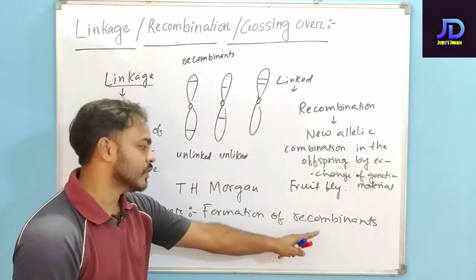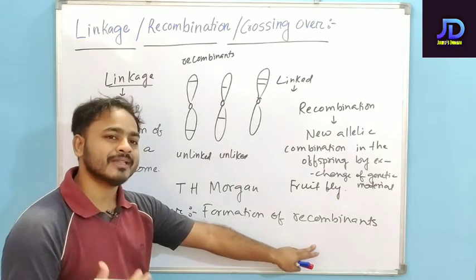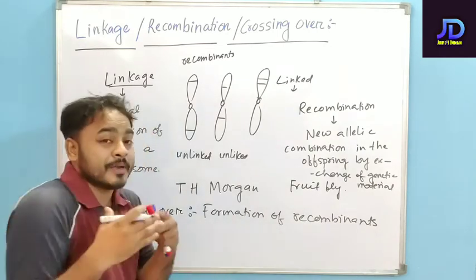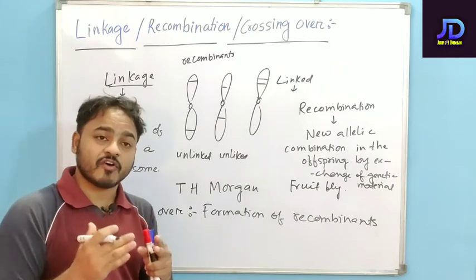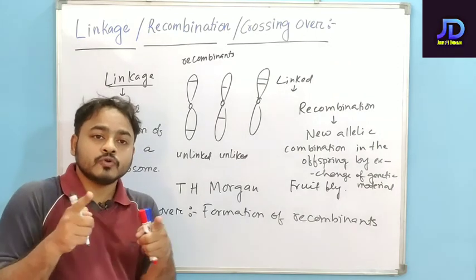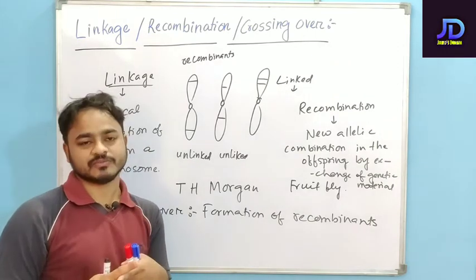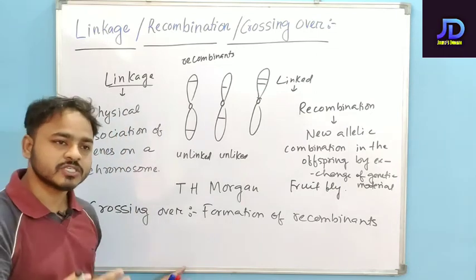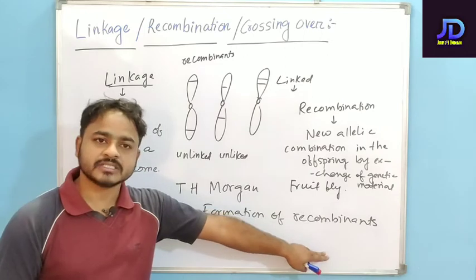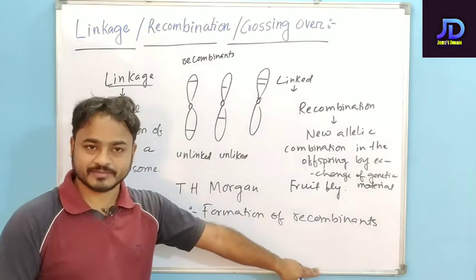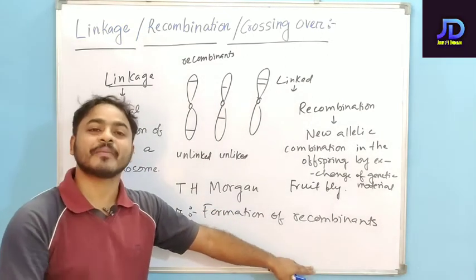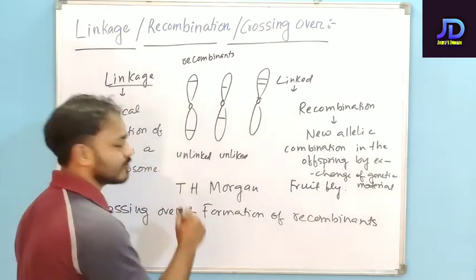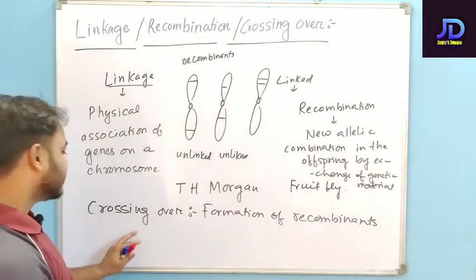Recombinants will be formed only when there is crossing over. Recombinants will be formed between the two synapsed homologous chromosomes. So crossing over is the process of formation of recombinants between the two synapsed homologous chromosomes.